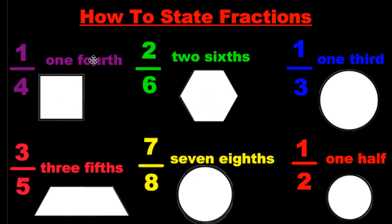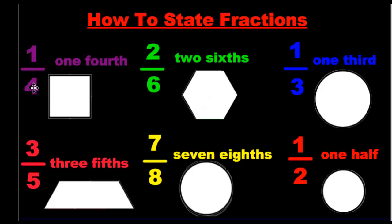Now how do we state fractions? If I have 1 over 4, I don't say 1 over 4. I say 1 fourth. You always put a th at the end. There are some exceptions. I'll talk to you about those in a bit. Now our denominator is 4, so I need to show 4 pieces. And I have to select 1.